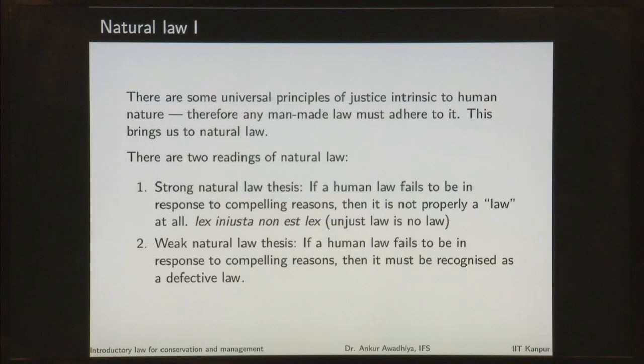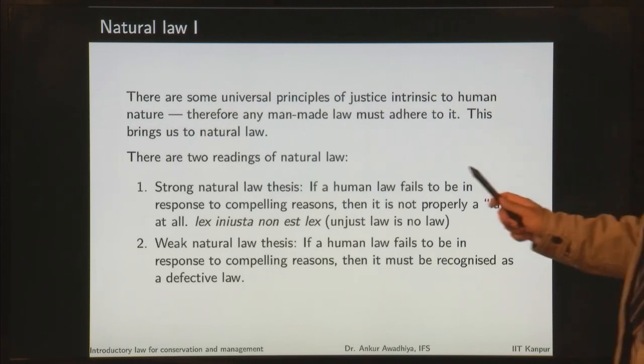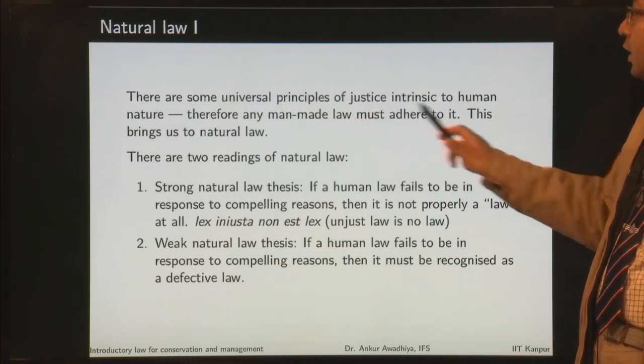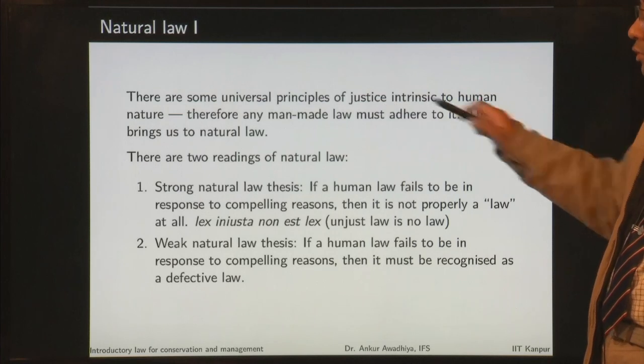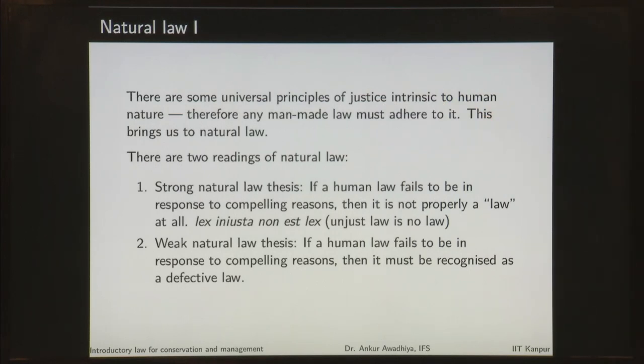Another way of looking at laws is natural law. Natural law says that there are some universal principles of justice intrinsic to human nature, and therefore any manmade law must adhere to them. Natural law says that the principles of justice are inside all of us naturally, and if any manmade law exists it should correspond to these principles of justice. Otherwise we will not call it a law — if a law is blatantly wrong, even though it is a command of the sovereign and has been enacted following all procedures, we will not call it a law because it does not adhere to these intrinsic principles of justice.